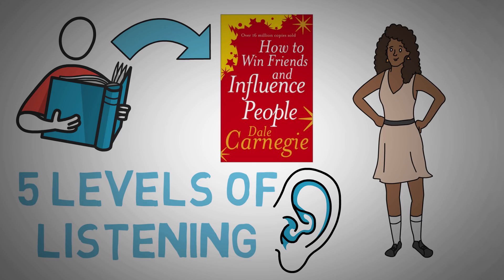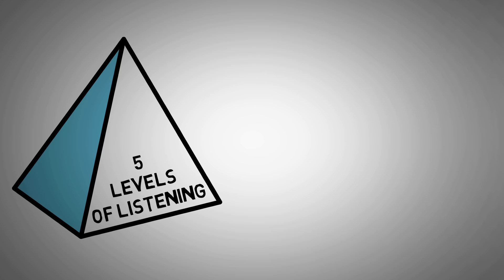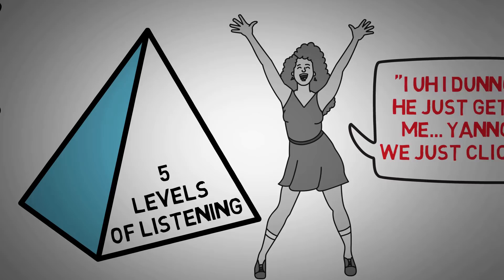Specifically, so that they feel like they are being listened to. If you want to take your relationship to the next level, ascending up this pyramid of the five levels of listening is how you do it. If you want your girl to be like, he just gets me, we just click, you have got to ascend up this pyramid.